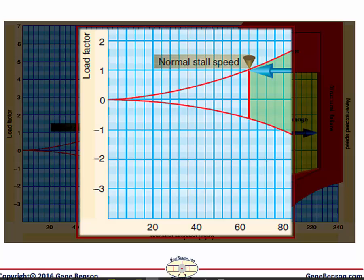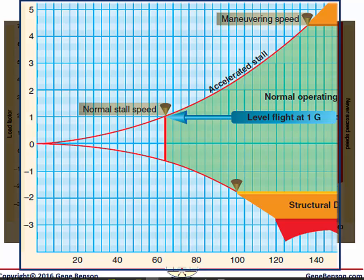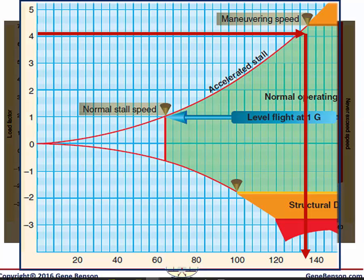The V-G diagram begins with the unaccelerated stalling speed. Unaccelerated indicates a load factor of 1, and where the 1 G line intersects the curve indicates the stalling speed. Maneuvering speed is determined by entering at the 4.4 G point and intersecting the curve, then dropping down to the airspeed line to find the maneuvering speed for positive load factors for the utility category airplane. We do the same for the negative limit load factor of 1.76, and the lower of the two values will be the maneuvering speed to use.